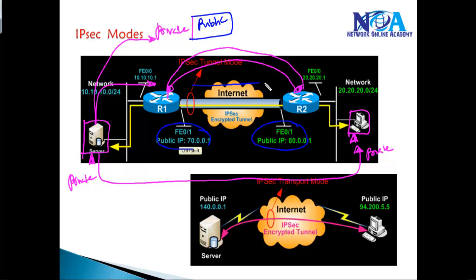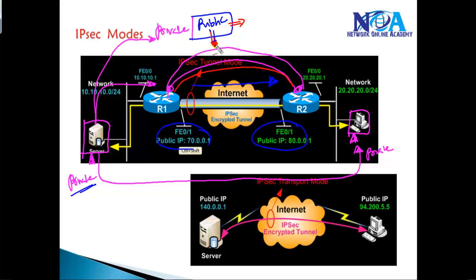The actual forwarding over the network does not happen based on the actual private addresses — it happens based on the outer header. That's what we call tunnel mode. In tunnel mode, extra IP information is added to the existing packet, and the actual forwarding on the network happens based on the outer IP header.